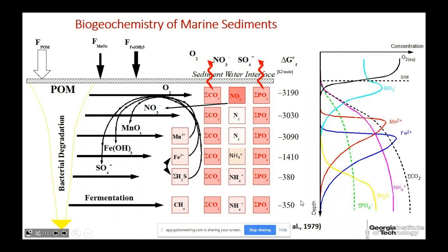I'm going to talk about primary production — not benthic primary production, just the application of sediments for primary production in surface waters. I'm also going to talk about the importance of sediments in the ocean acidification issue, because I think we got some important information from the work we've done in sediments. The other challenge of this talk was putting a chemistry talk together without a chemical equation — and I did. It was very hard; until about 10 minutes ago I removed my last equation.